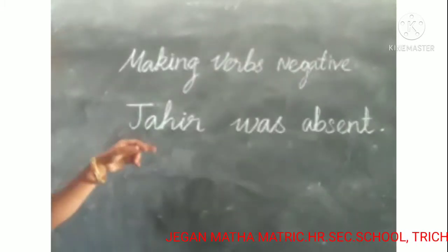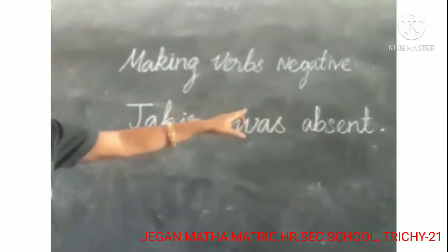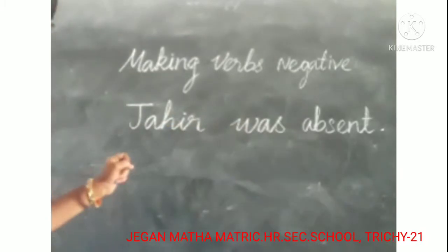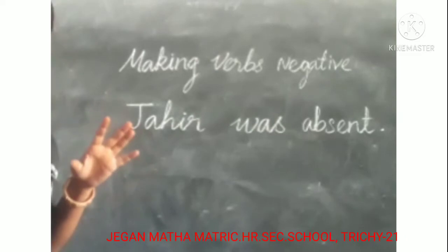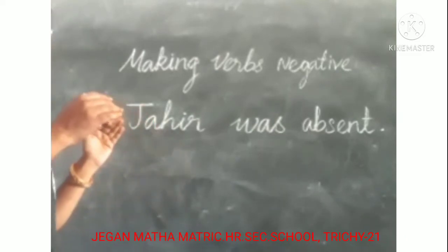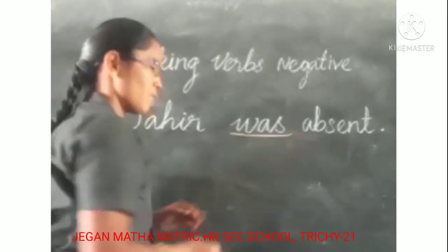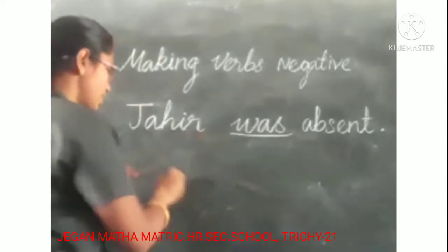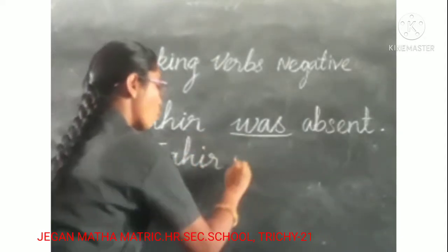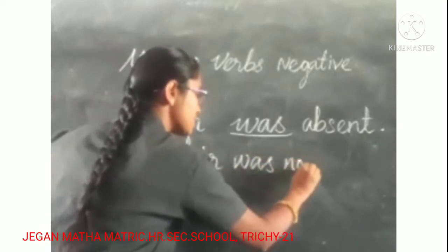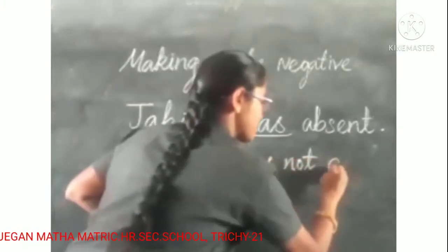Same as the last sentence, look at: 'Jagir was absent.' How do you change this sentence into negative? We use 'not' after the verb. Here the verb is 'was', which is the past form. So we add 'not' after 'was': 'Jagir was not absent.'